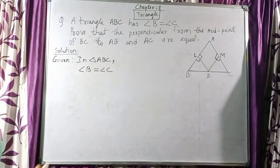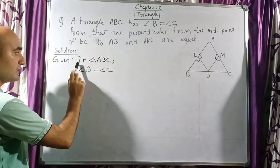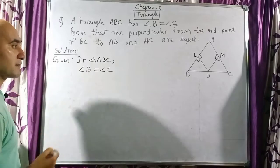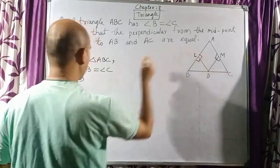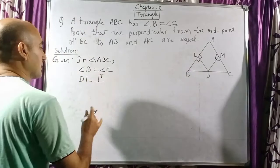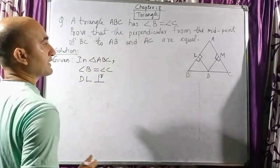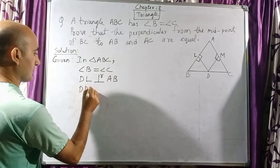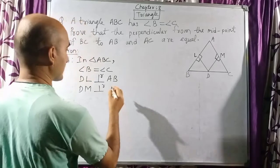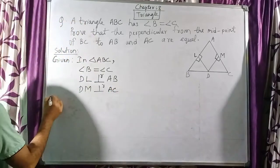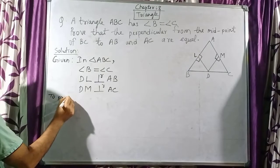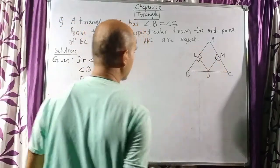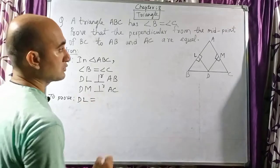Let us begin the solution. Given: in triangle ABC, angle B is equal to angle C. Also given that DL is perpendicular to AB and DM is perpendicular to AC. To prove: DL is equal to DM.